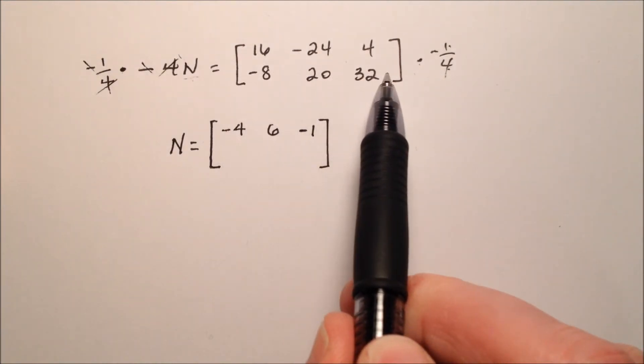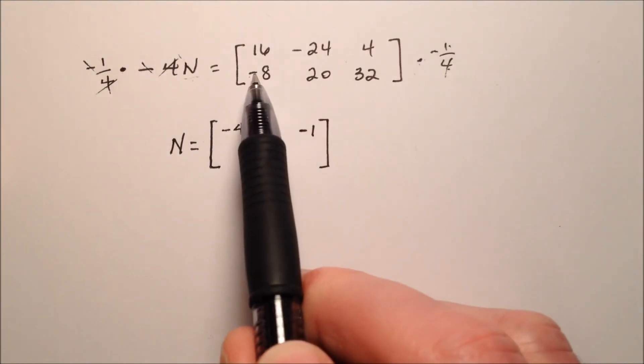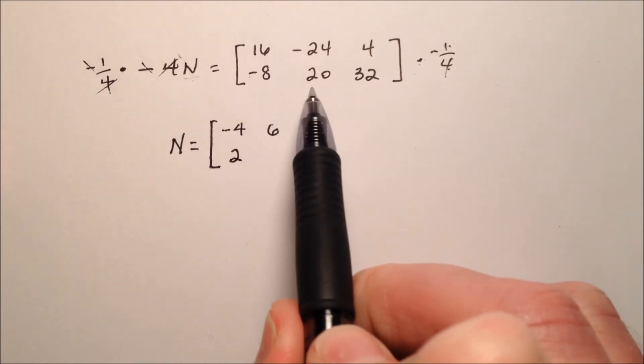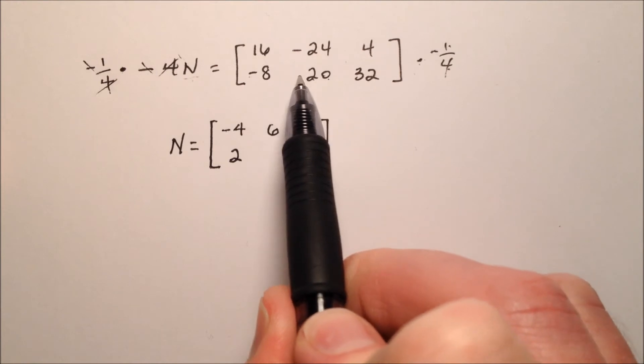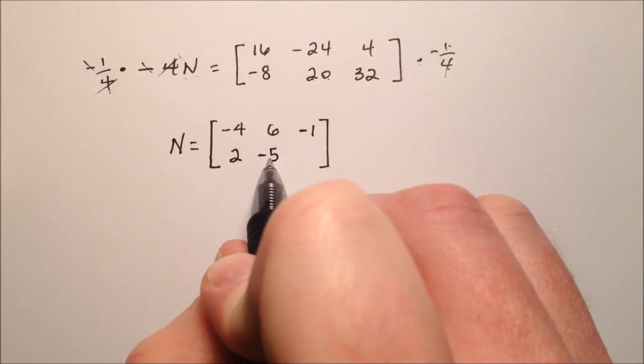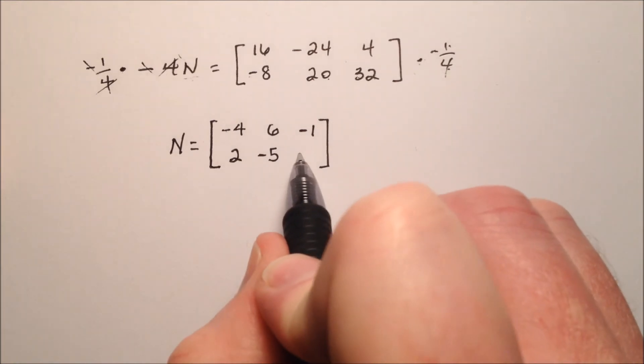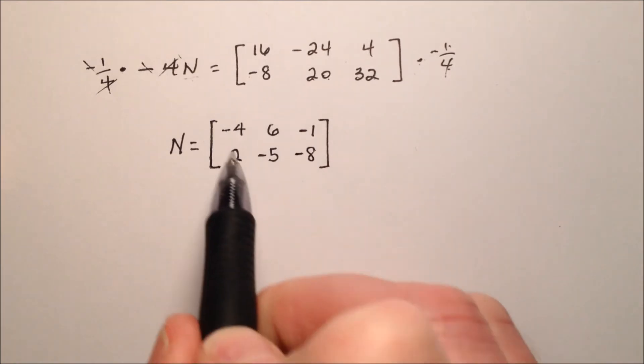So down here, this last row, negative 8 times negative 1 fourth, change the sign, divide by 4, so positive 2. 20, change the sign, divide by 4, is negative 5. And 32, change the sign, divide by 4, will be negative 8.